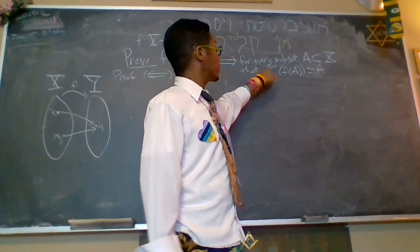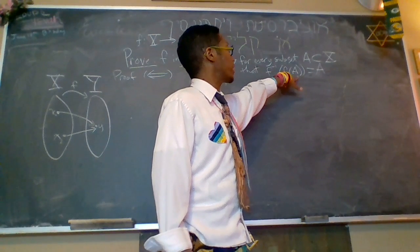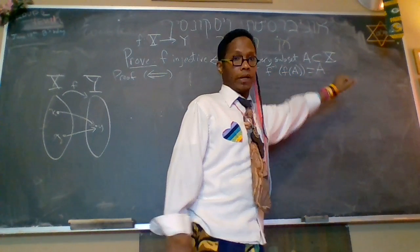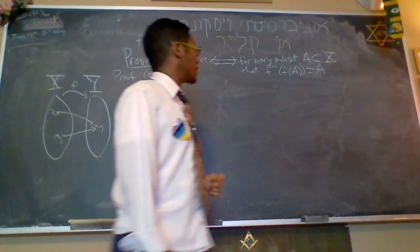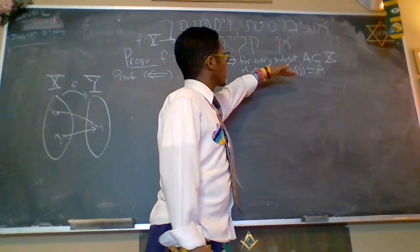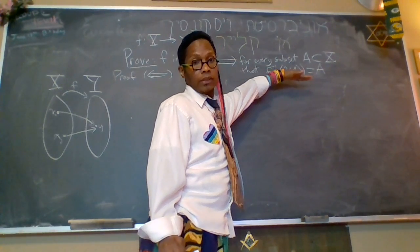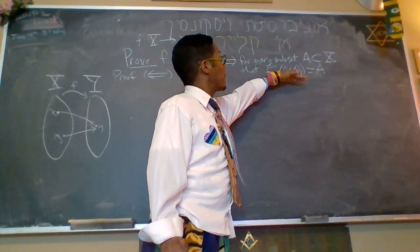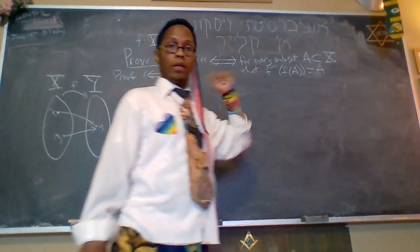But with f is injective, then we have also the case where this set on the left-hand side is contained in the right-hand side. And I proved that already in class. So now I'm going to do the reverse direction, which is proving that if this case holds for every single subset A of X, that f is injective.